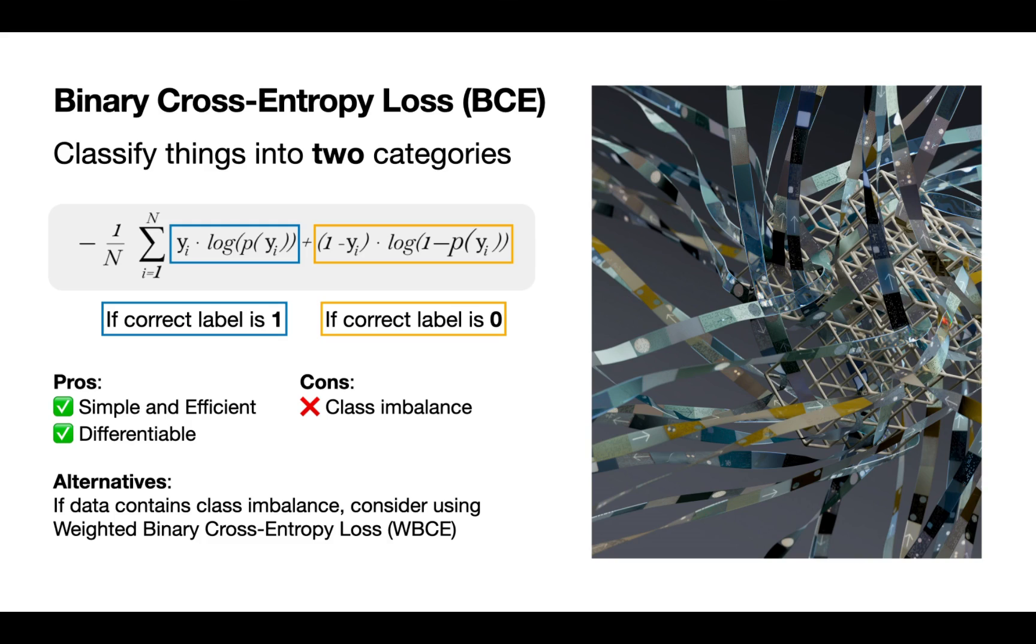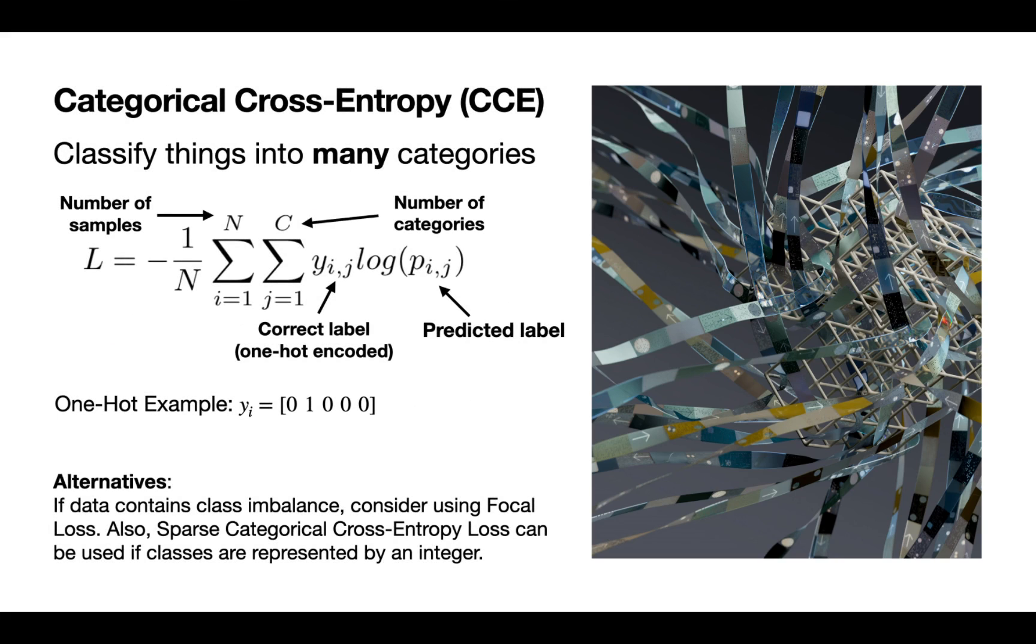The pros of this is it's quite simple and efficient and differentiable, but it can have problems with class imbalance, where maybe one of the two categories are just much larger than the other. For example, in many disease studies for a very uncommon disease, maybe 95% of cases will be healthy cases and only 5% or much less will be the actual disease states. In those cases, you could consider using a weighted binary cross-entropy loss, where you give more weight to these smaller classes, although they are smaller in number.